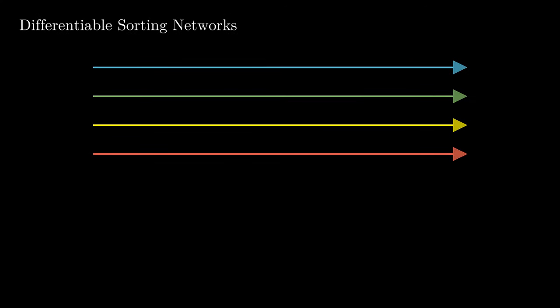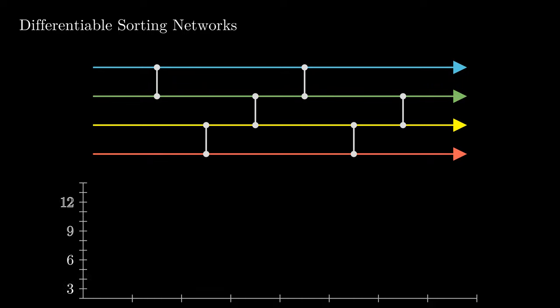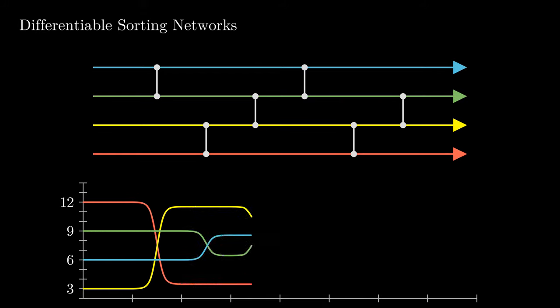Now that we know how to make a swap differentiable, let's consider a full differentiable sorting network. Here, we have a four-wire sorting network where the swaps are evenly spread out to simplify the visualization. In the bottom plot, the value on each wire is displayed and you can see how the swaps affect the values on each of the wires.